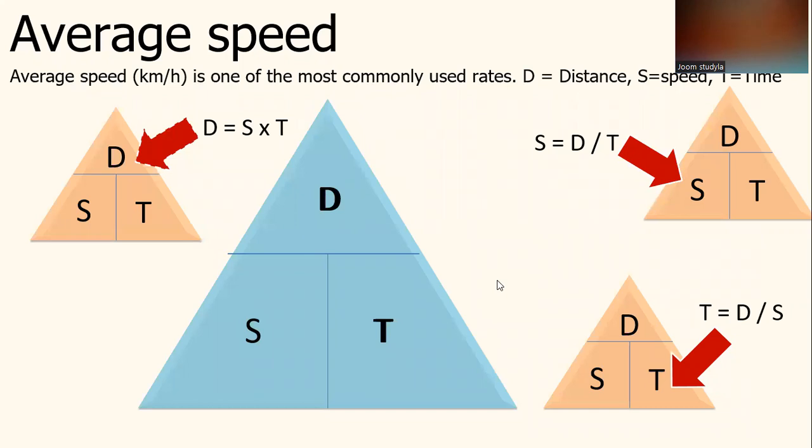Next, we go to the topic of average speed. As you know, average speed in km per hour is one of the most commonly used rates. For example, in this example, we have D represents distance, S represents speed and T represents time. D equals S speed multiplied by time to get the distance. How to get the speed? Distance divided by time. And how to get the time? Distance divided by speed.